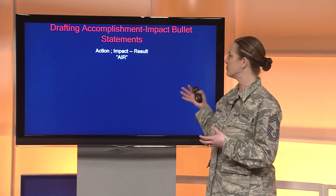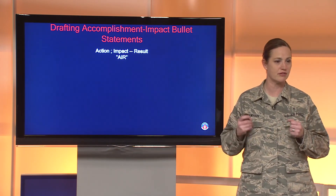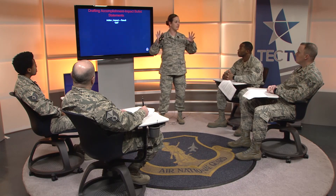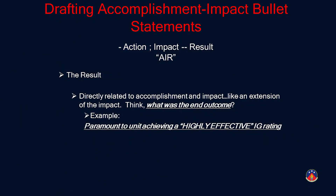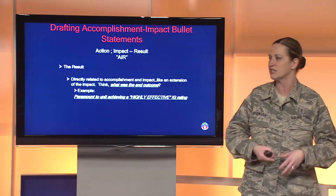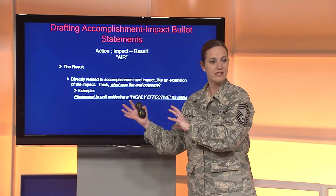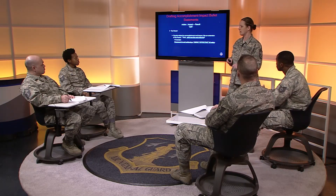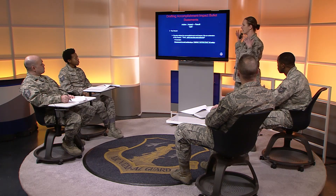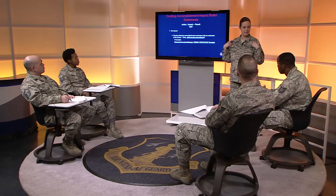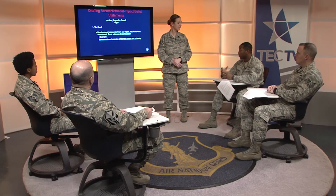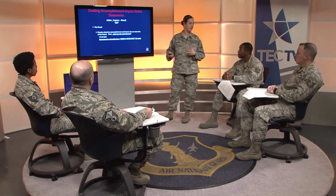Now that we have our action and impact, we need the result — the big picture outcome of what the airman did. Think big. In our example, the result is: 'paramount to the unit achieving a highly effective IG rating.' Processing records and meeting chalk times can directly affect that inspection grade. A highly effective rating is one of the highest you can receive, and depending on the scope, it can affect the whole wing — especially in an IG setting.